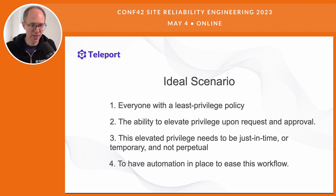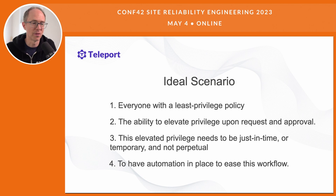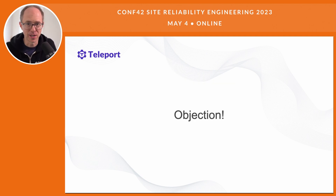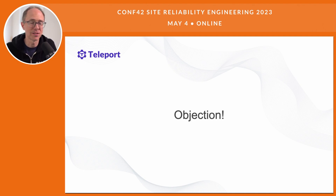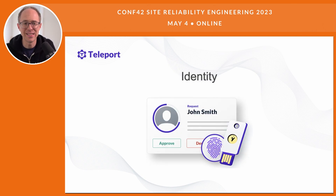So we have these four requirements: everyone with a least-privileged policy; the ability to elevate privilege upon request and approval; this elevated privilege needs to be just-in-time or temporary, not perpetual; and there needs to be automation in place to ease this workflow. Now, before we move forward — bad actors can still get access to privileged user accounts and wreak havoc. Just because there isn't blanket super user access, and regardless of just-in-time access, it doesn't mean a privileged account can't get hacked. And you're absolutely right.